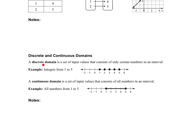We also revisit discrete and continuous domains. A discrete domain has individual points — for example, one, two, three, four, five. A continuous domain is a set of points that are more continuous, such as between one and five. For the discrete domain, you would say the domain is one, two, three, four, five. For the continuous domain, you would say one less than or equal to x less than or equal to five.